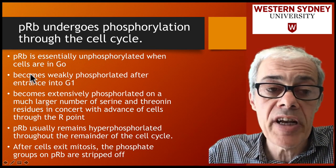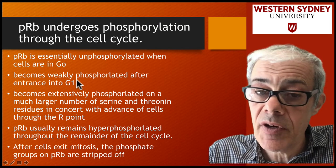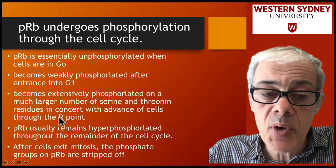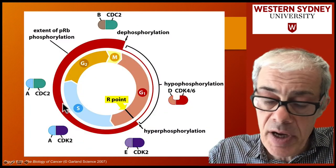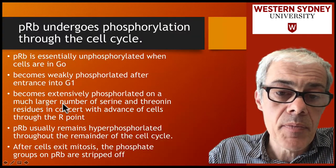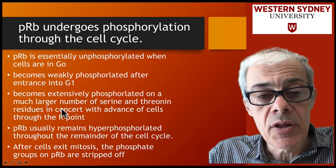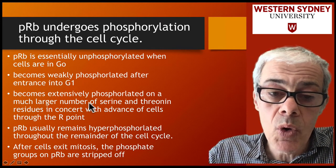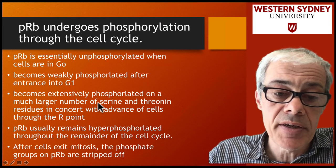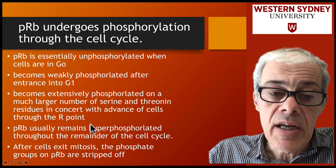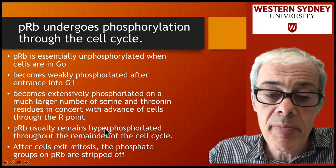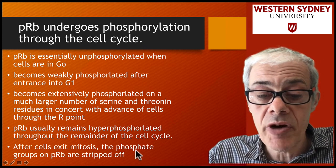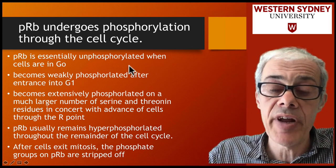During G1, retinoblastoma becomes weakly phosphorylated early in G1. As you move towards the restriction point in late G1, retinoblastoma becomes more highly phosphorylated. It becomes hyperphosphorylated as you pass the restriction point, and it remains hyperphosphorylated until the end of the cell cycle, where it again returns to an unphosphorylated state.